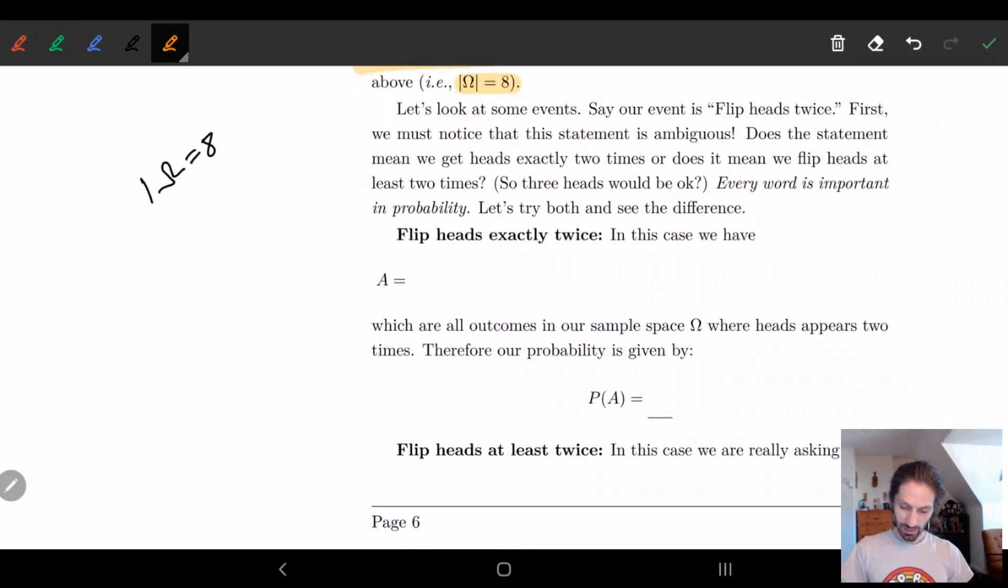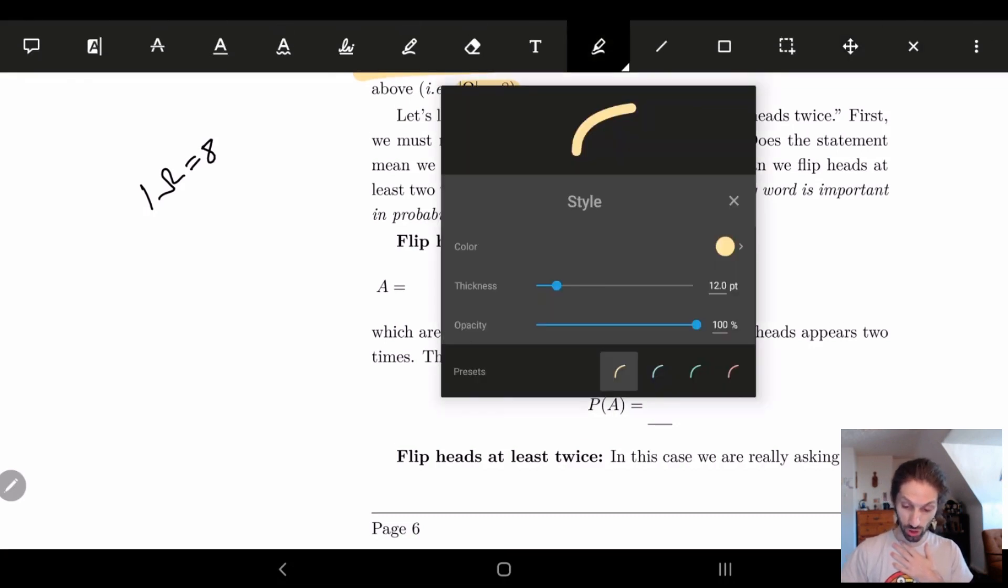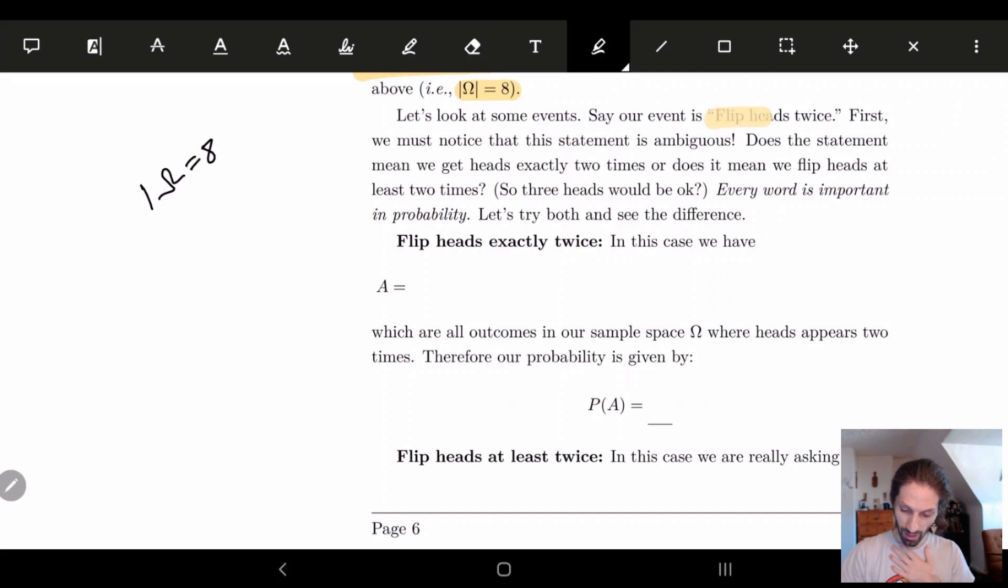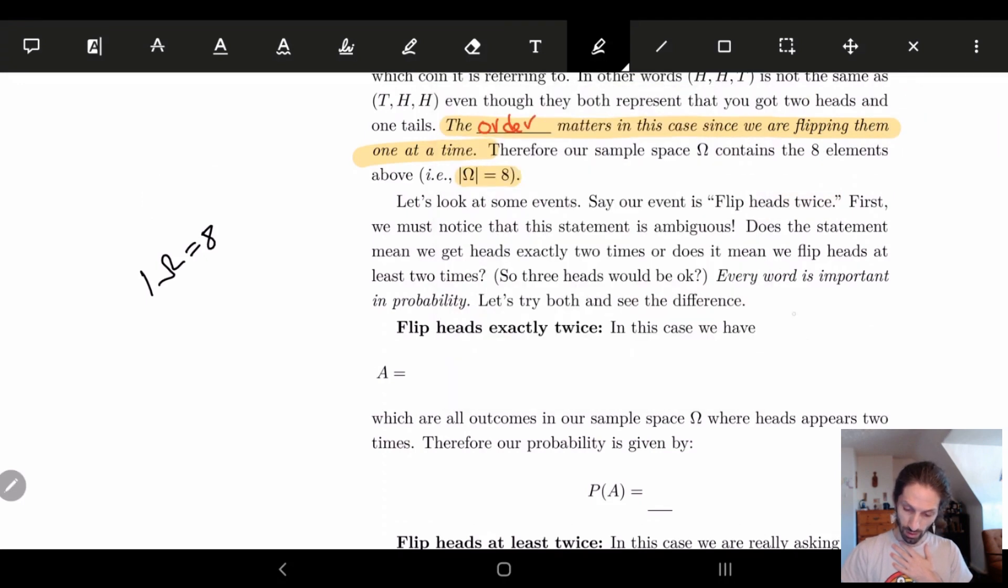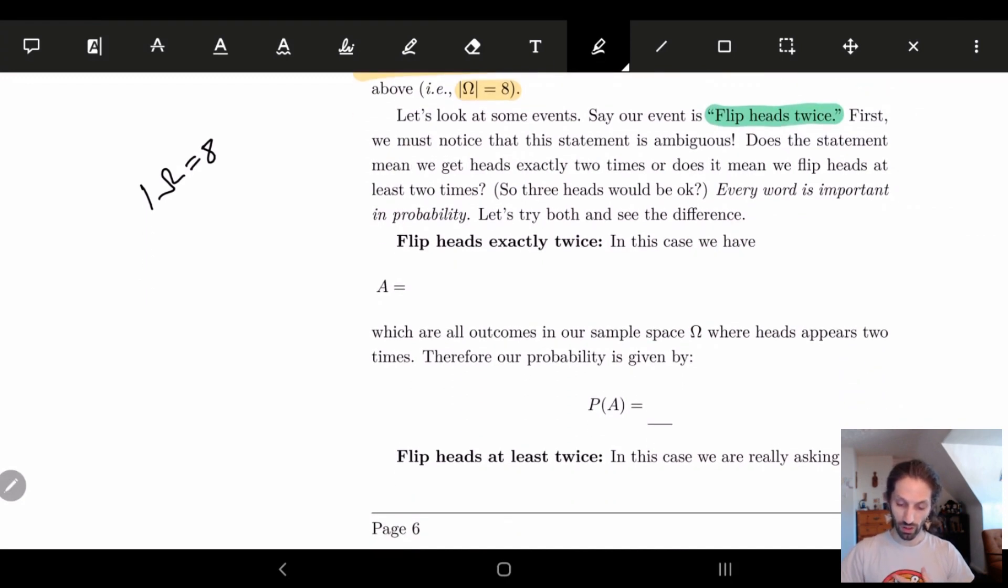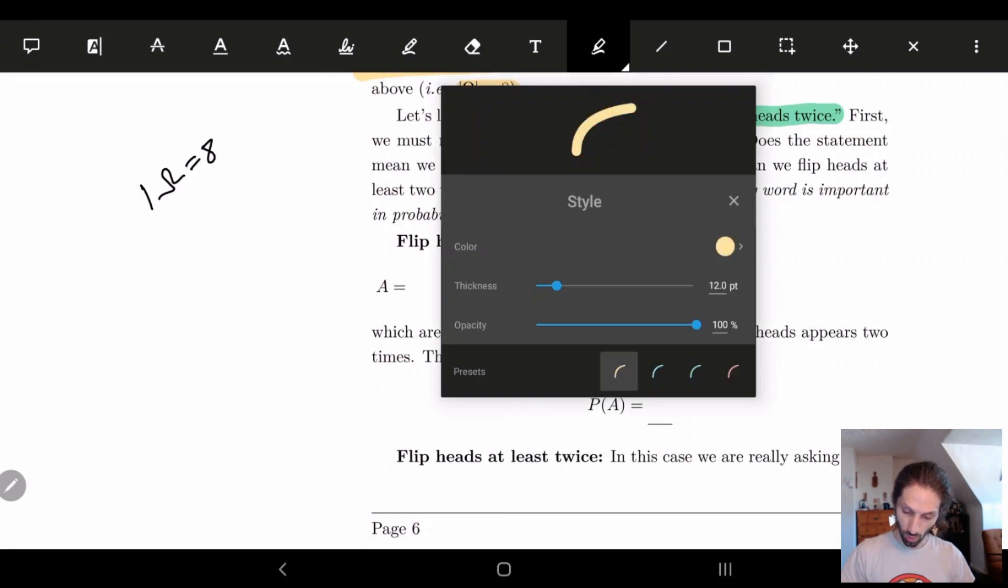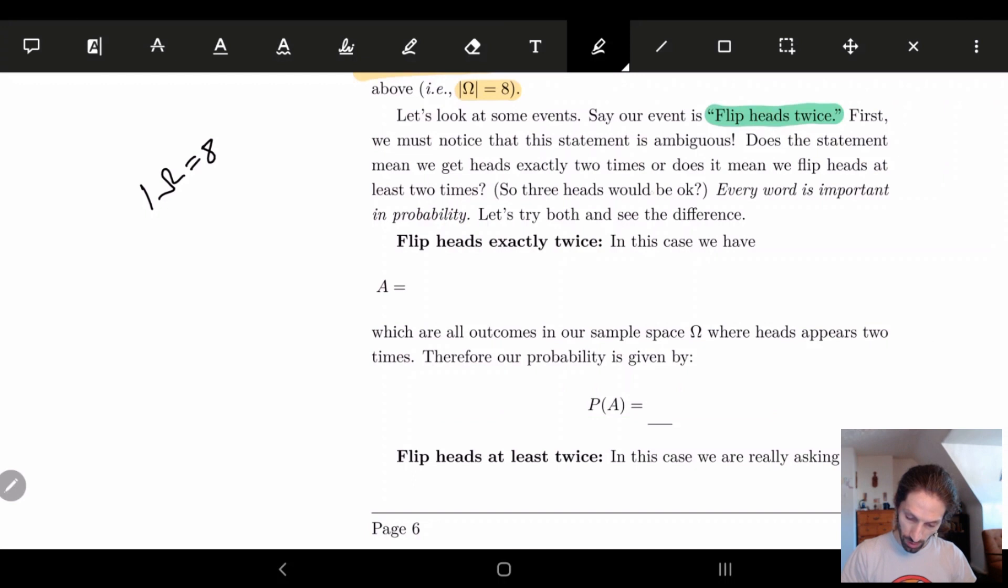So let's look at some events in the space. Here I'm also going to talk a little about language. What happens if I make a mistake and ask the following question? I'm human, so there's a good chance I will make mistakes too. Say I ask you for the event "flips heads twice." Now this is ambiguous. The reason why it's ambiguous is because I'm not actually telling you whether I want exactly two heads or at least two heads. We don't actually know.